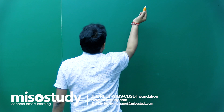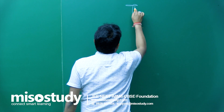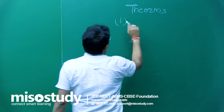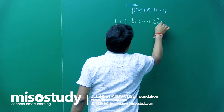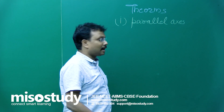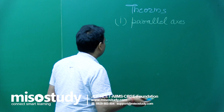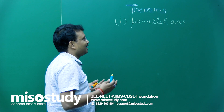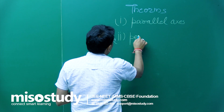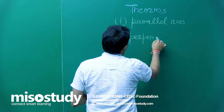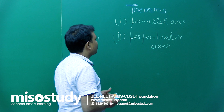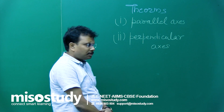The general name is theorems. First is parallel axis theorem. In some books the spelling of axis is AXIS and in some it is ES — I am not very confident about this, so please do not mind. Parallel axis is the first, and the second is perpendicular axis theorem. So there are two theorems: parallel axis theorem and perpendicular axis theorem.